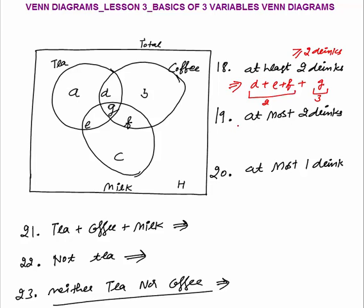At most two drinks means maximum two drinks — we count all those who consume less than or equal to two drinks. First, the two drinks: D plus E plus F. Then one drink: A plus B plus C. Then zero drinks: H. So it will be D plus E plus F plus A plus B plus C plus H.